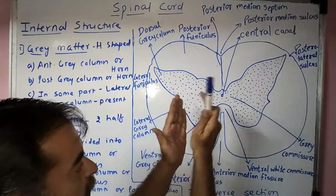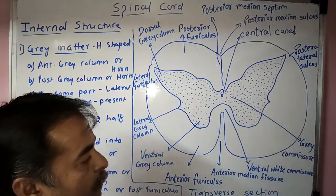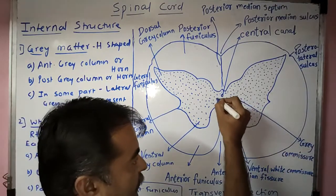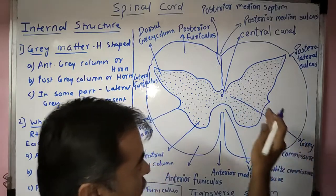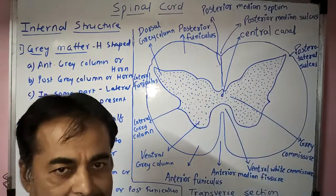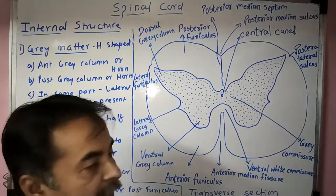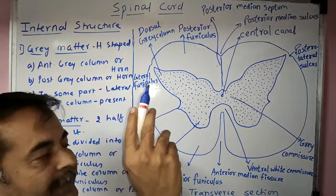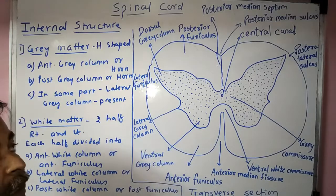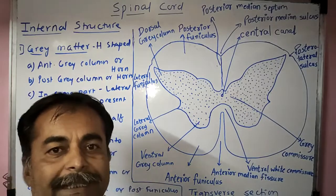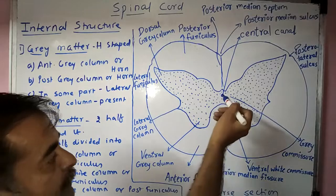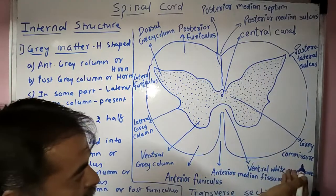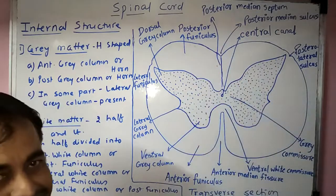The right and left grey columns are connected with the help of the grey commissure. This grey commissure is traversed by the central canal, which is the continuation of the cavity of the fourth ventricle — that is why it is called the central canal.